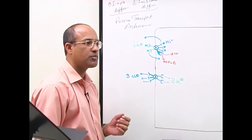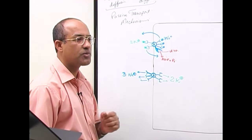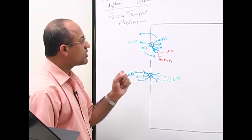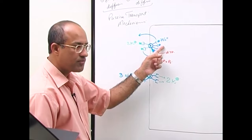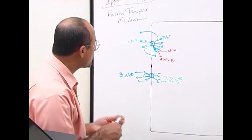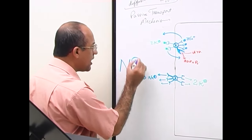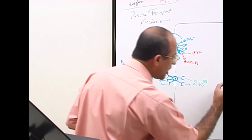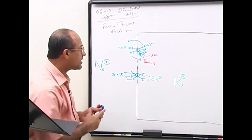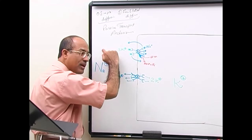This is a special type of integral protein in the cell membrane, universally present in every cell. Its function is to pump sodium out of the cell and pump potassium into the cell. We already know the sodium concentration outside the cell is very high and the potassium concentration inside the cell is already high.